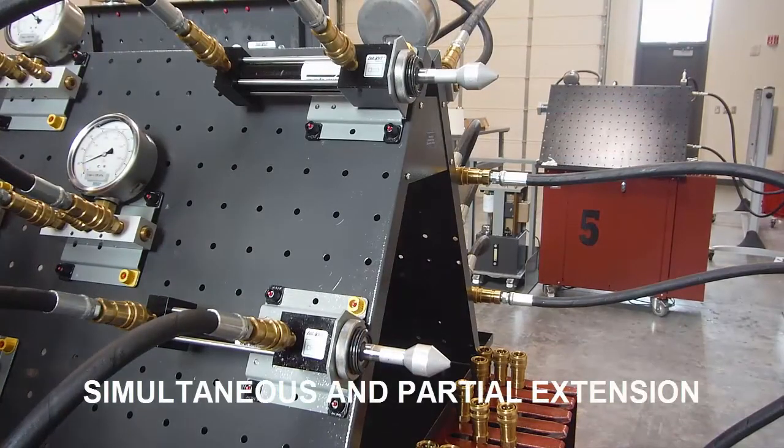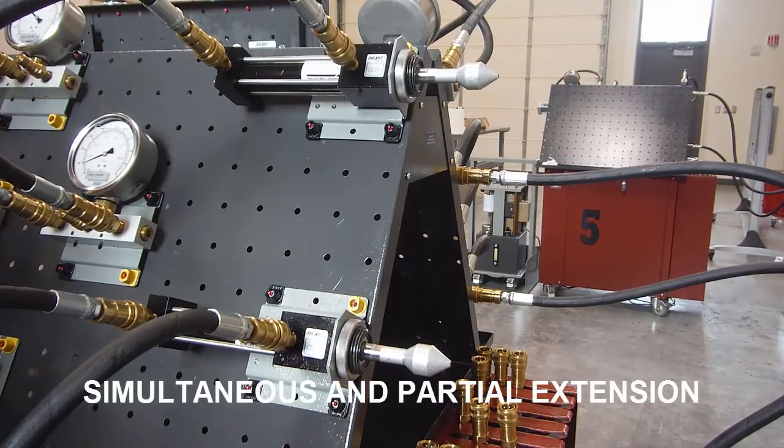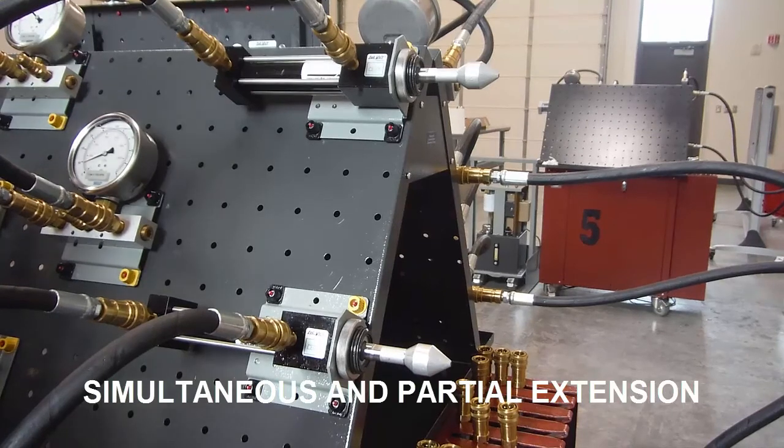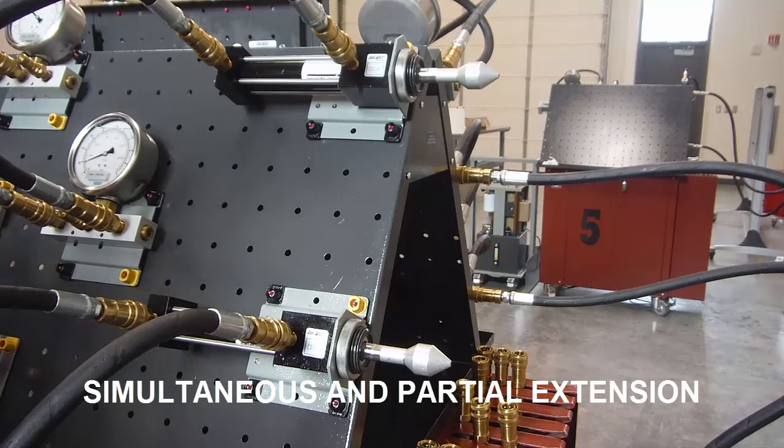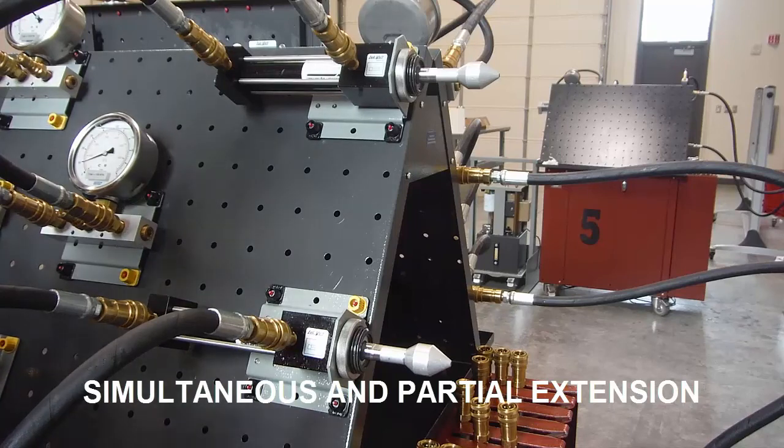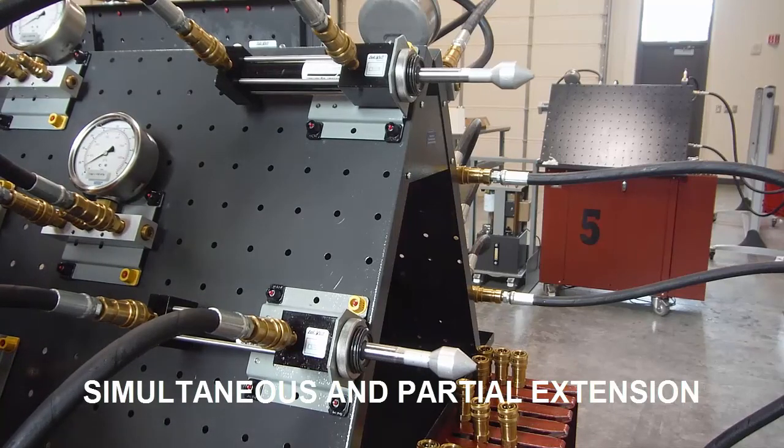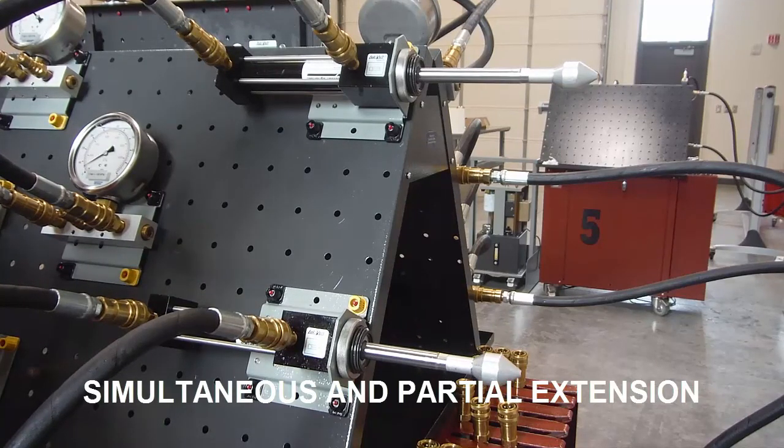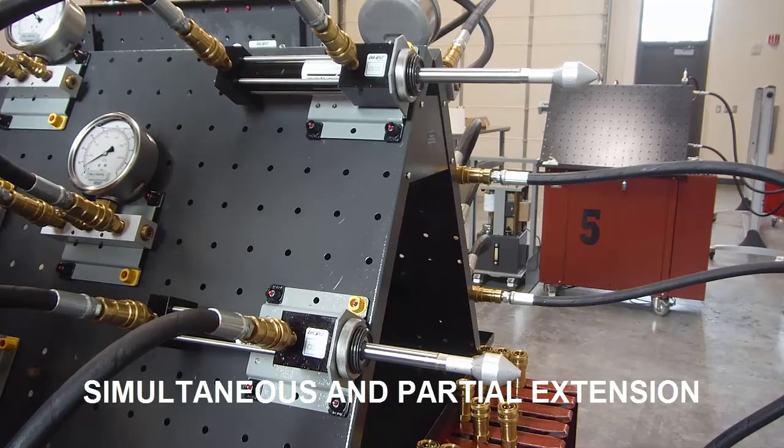So here we're going to demonstrate simultaneous extension, but the downstream cylinder will only extend roughly about 60% due to the difference in rod end area, volume, and cap end or cap end volume. So when you extend it, top one extends full extension, bottom one is roughly about 60%, about 2.4 inches.